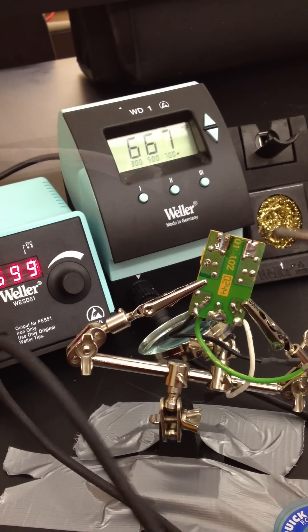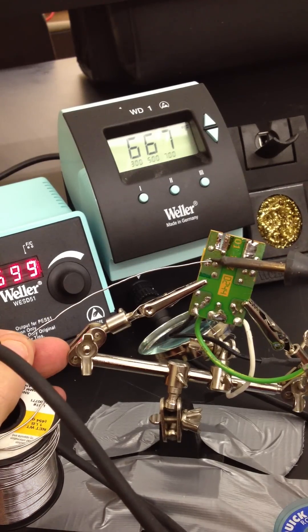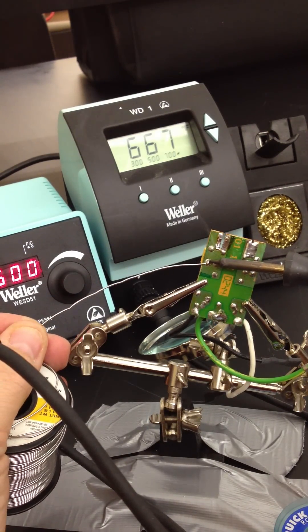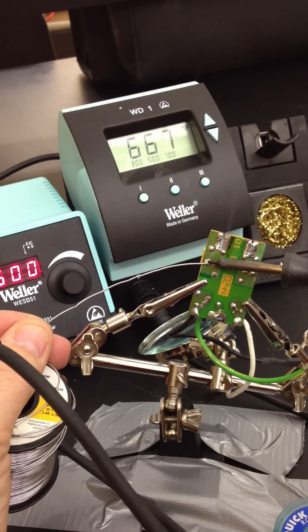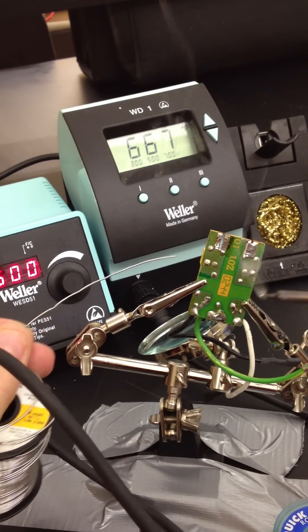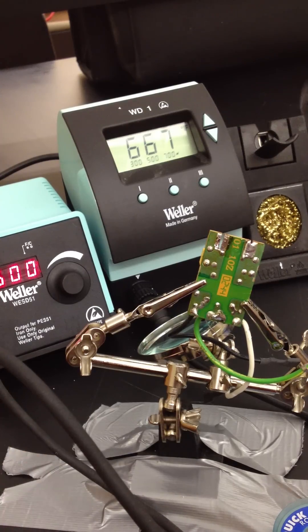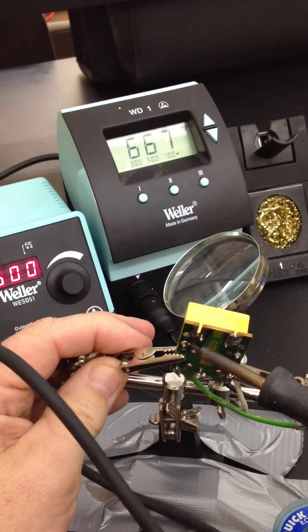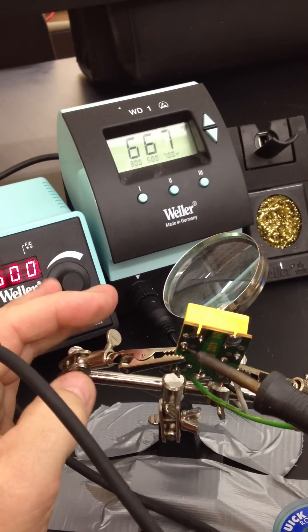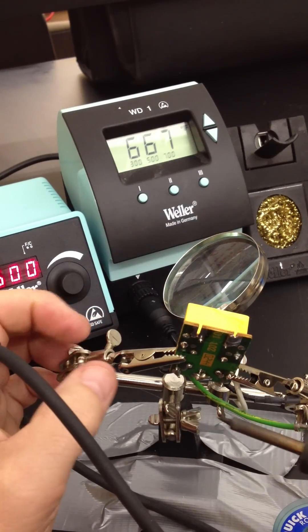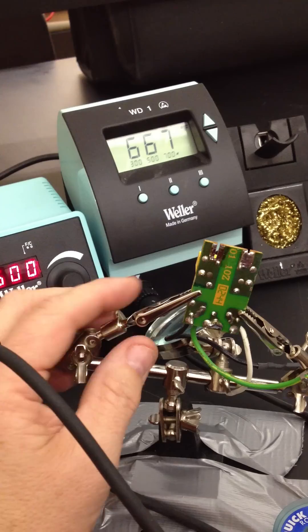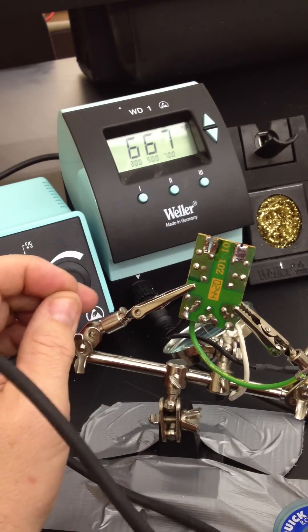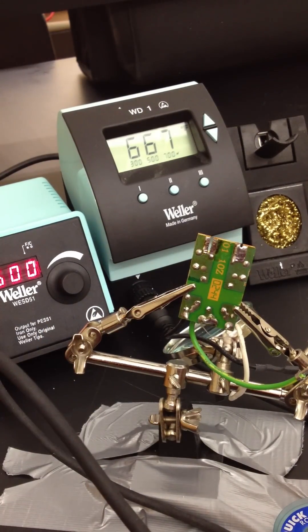When you're applying solder, one of the things you want to be sure is, don't get too much. You need just enough to make a good connection. If you look at that from the side, you can see it's just got a small pool of solder around the end of that post. Of course, if you're going to take one of these components off, you'd have to desolder all of them at once. And it's a good idea to pull on it. You can find out and feel which one's still under tension.